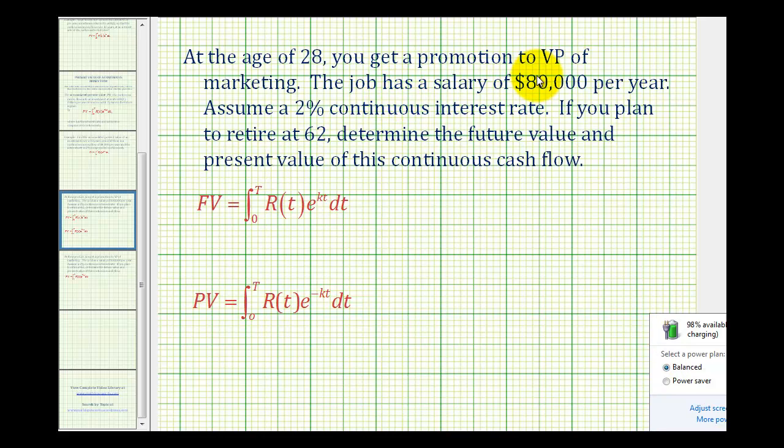At the age of 28, you get a promotion to VP of Marketing. The job has a salary of $80,000 per year. Assume a 2% continuous interest rate. If you plan to retire at 62, determine the future value and present value of this continuous cash flow.